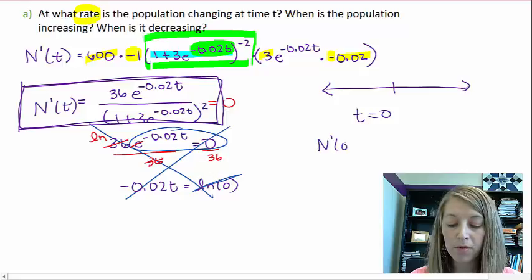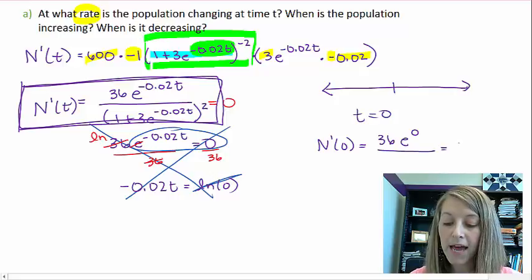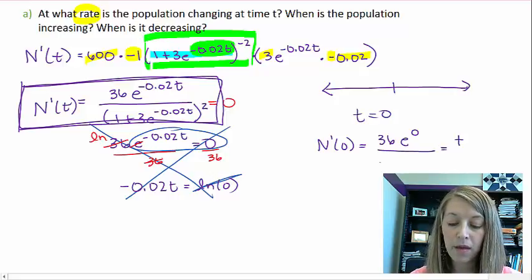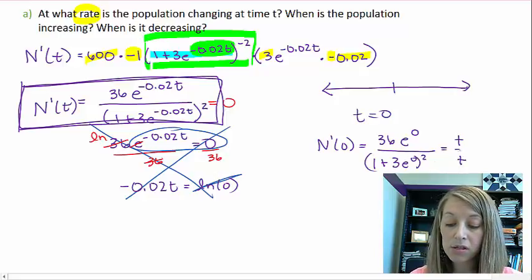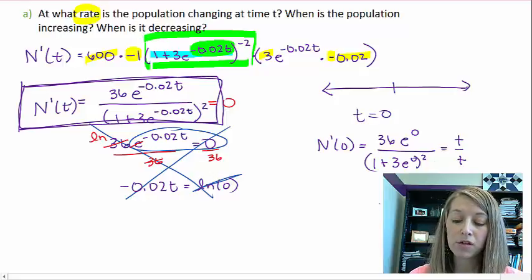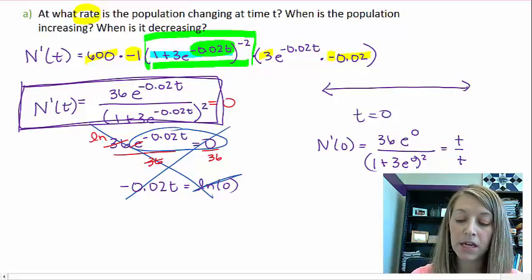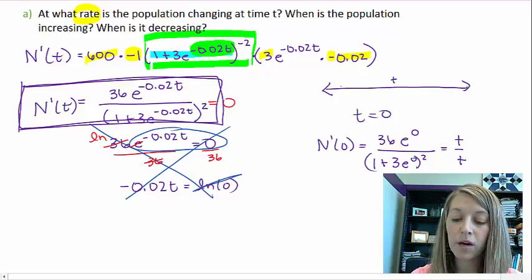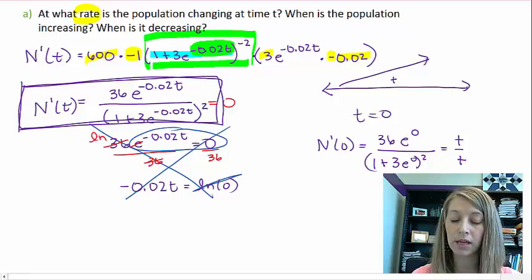So if I find N'(0), on the top I have 36 times e to the 0. I know that's guaranteed to be positive. On the bottom I have 1 plus 3 times e to the 0 squared. I know that's also guaranteed to be positive. So my number line is guaranteed to be positive everywhere. So that means it is increasing everywhere.